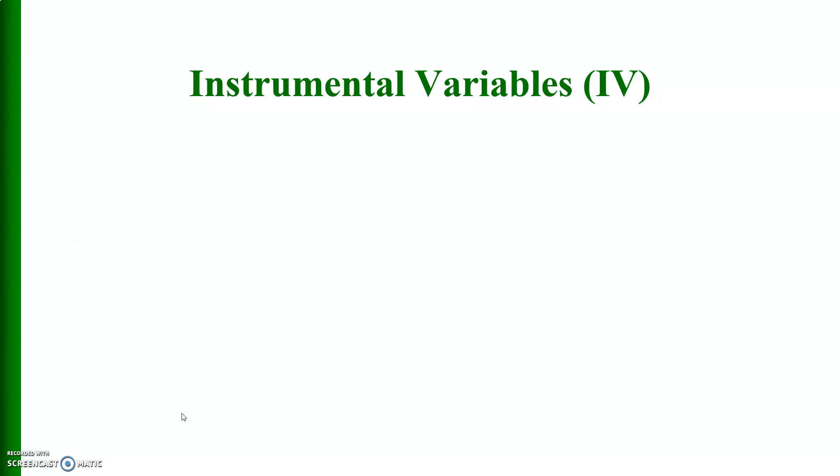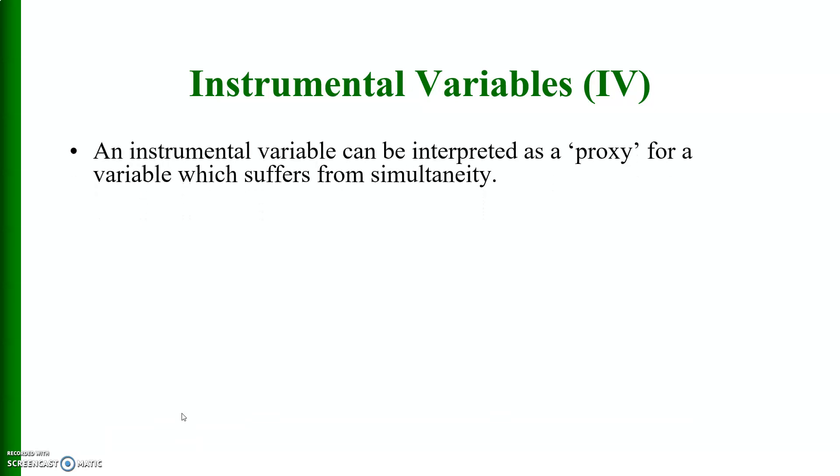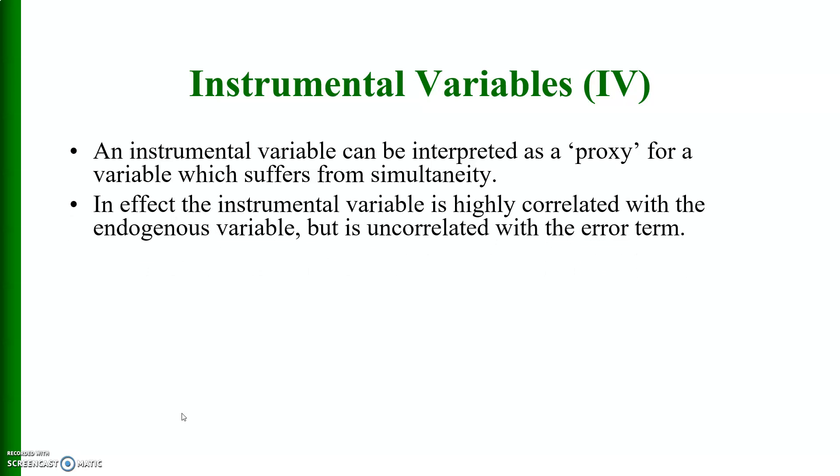Instrumental variables. We have already discussed this topic in my other videos in greater detail, but here also I will highlight this. An instrumental variable can be interpreted as a proxy for a variable which suffers from simultaneity. In effect, the instrumental variable is highly correlated with the endogenous variable but is uncorrelated with the error term.